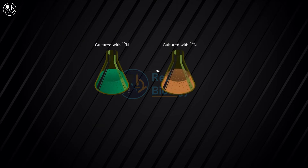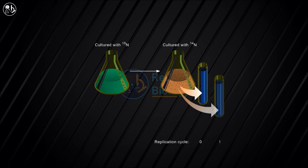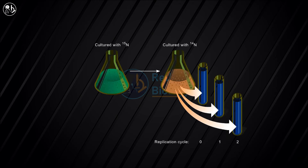Then they shifted the bacteria to a growth medium containing the normal ¹⁴N isotope, so all newly synthesized DNA would have normal density. Cultured samples were taken at different times corresponding to replication cycles 0, 1, and 2.